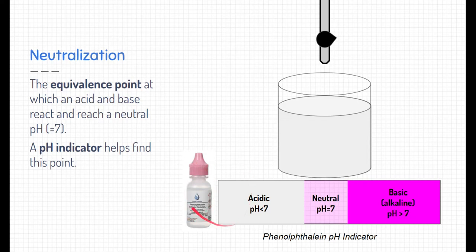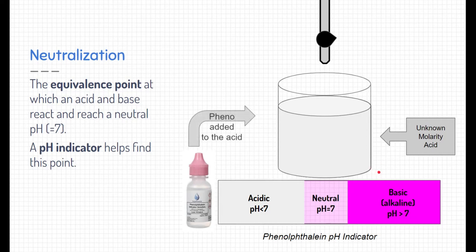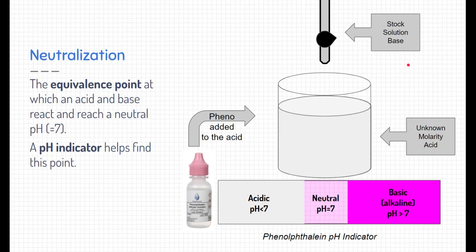Phenolphthalein is going to be our pH indicator. Here we have a solution of unknown molarity acid, and we're going to put some phenolphthalein in that acid. The chart at the bottom shows whether phenolphthalein is indicating acid, neutral, or base. In an acid, phenolphthalein doesn't really do anything — it stays clear. We're going to try to get this unknown molarity acid to turn neutral by adding a base from our stock solution, whose molarity we know, through a burette, allowing it to drip into the acid.